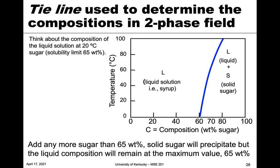We can also tie this tie line concept back to the water-sugar diagram we looked at before. At 20 degrees in the two-phase region, the red line is our tie line — it's at a single temperature going from the line separating solid plus liquid to just liquid, with 100 percent sugar on the other end. You can use this tie line in the same way with other diagrams like this water-sugar example.